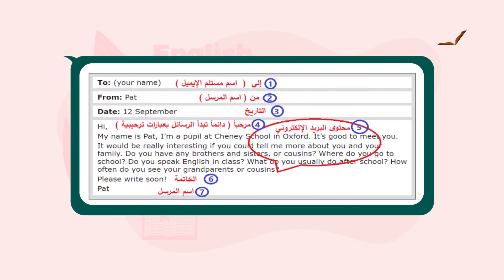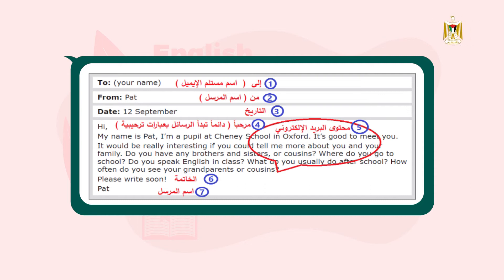Now let's see together and check your answers. The first part: the name of the receiver. كما تشاهدون، الجزء الأول من البريد الإلكتروني هو اسم المستقبل، أي الشخص الذي سنرسل إليه الإيميل. Two: the name of sender. Three: the date. ثانياً اسم المرسل، ثالثاً التاريخ، أي تاريخ كتابة البريد الإلكتروني.